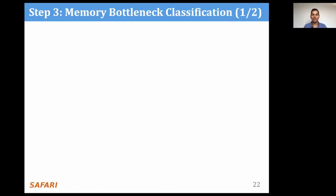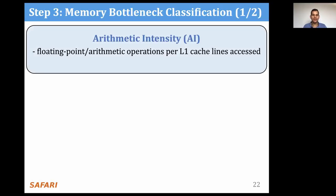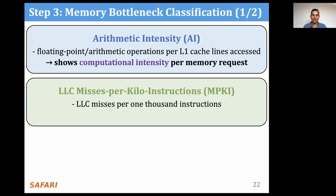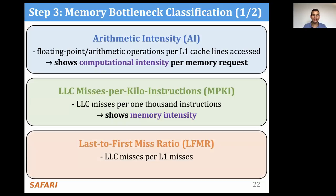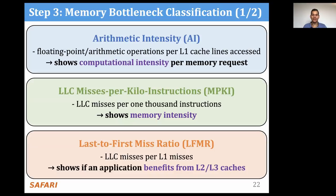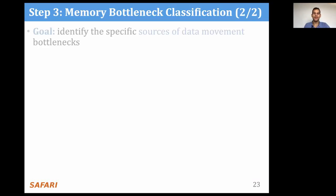Finally, let's look at step three. While step two allows us to understand the memory characteristics of applications, we still need to understand how other features can cause memory bottlenecks. To do so, we use three architecture-dependent metrics. The first is arithmetic intensity, or AI, defined as the number of floating-point or arithmetic operations per L1 cache line access. The second is last-level cache misses per kilo instruction, or MPKI, defined as LLC misses per 1,000 instructions. This shows the memory intensity of an application. Third, we define a new metric called last-plus miss ratio, or LFMR, defined as last-level cache misses per L1 cache misses, which shows how much the application benefits from the L2 and L3 caches.